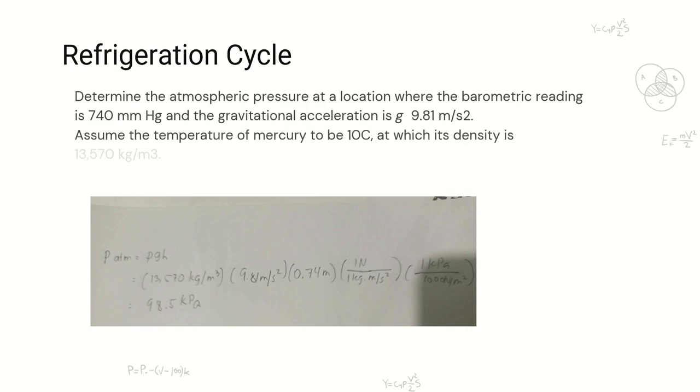Refrigeration cycle: Determine the atmospheric pressure at a location where the barometric reading is 740 mmHg and the gravitational acceleration is 9.81 m/s².